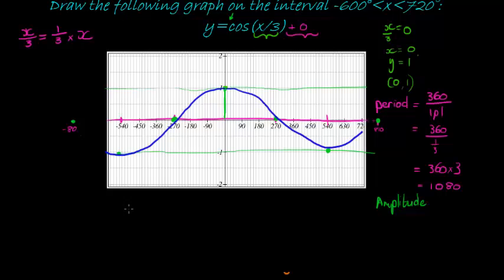So now they might ask me questions like, what is the amplitude? Well, the amplitude is just one. What is the period of this function? We've calculated that, remember, period is 360 divided by the coefficient. In this case, it is a third, even though it looks like divide by three. So the period we worked out was 1080. Remember, period is in degrees when we're working with degrees.